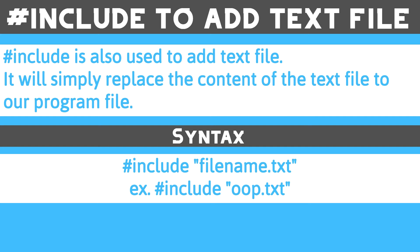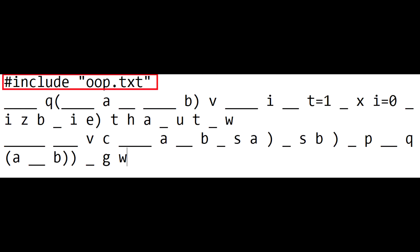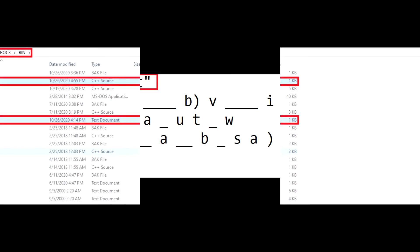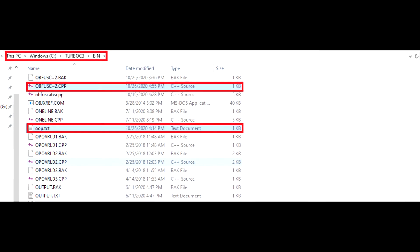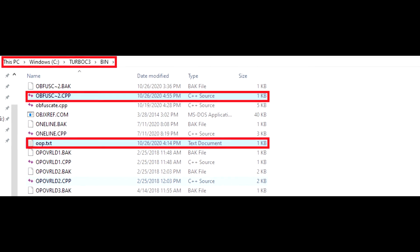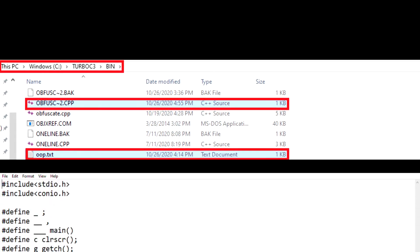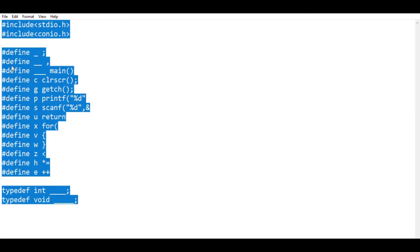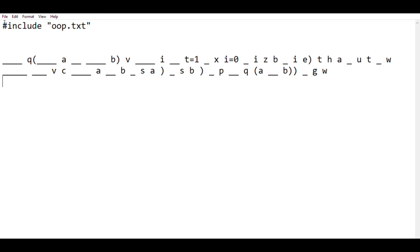Basically, hash-include is used to import the text from a text file into our program. The syntax is as shown here. Here, as you can see, oop.txt is the file name. I have stored this text file at the same location as the C file. It will extract all text from the oop text file into our program. So instead of using hash-include, we can copy the content of the text file and paste it into our C file.